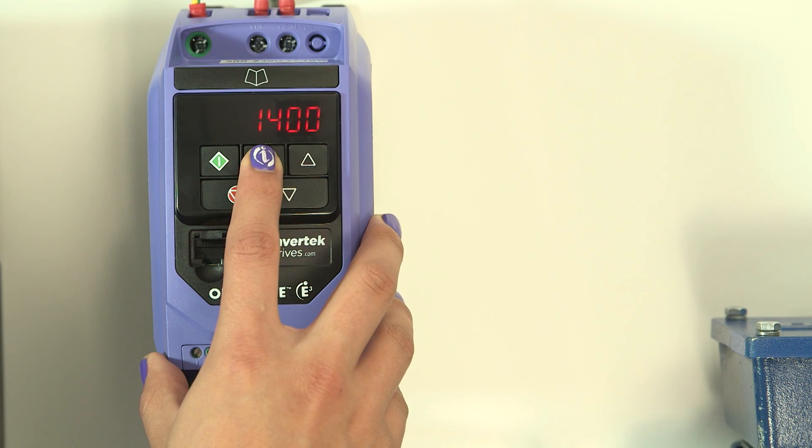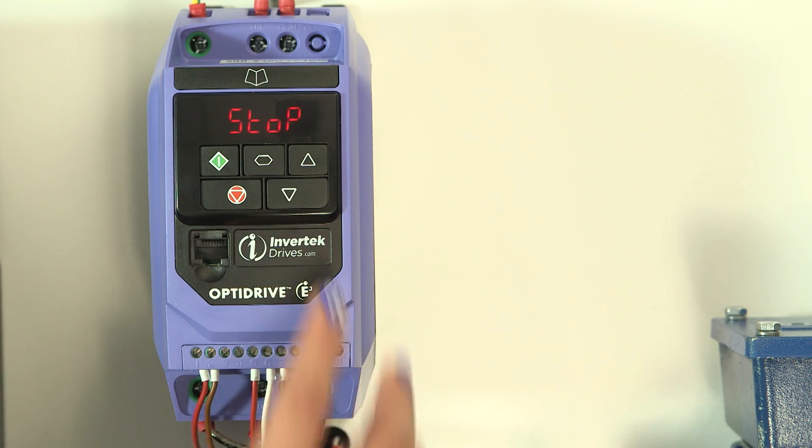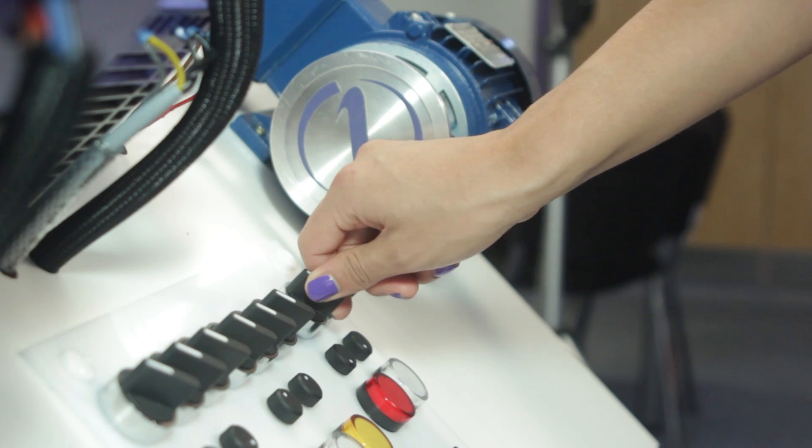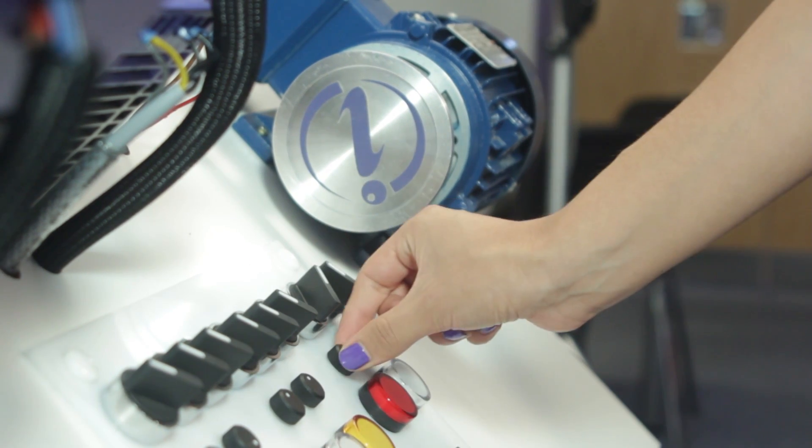That's it. A long press on the navigate button will take you back to the starting display and we can start the drive with the enable switch and adjust the speed with the pot.